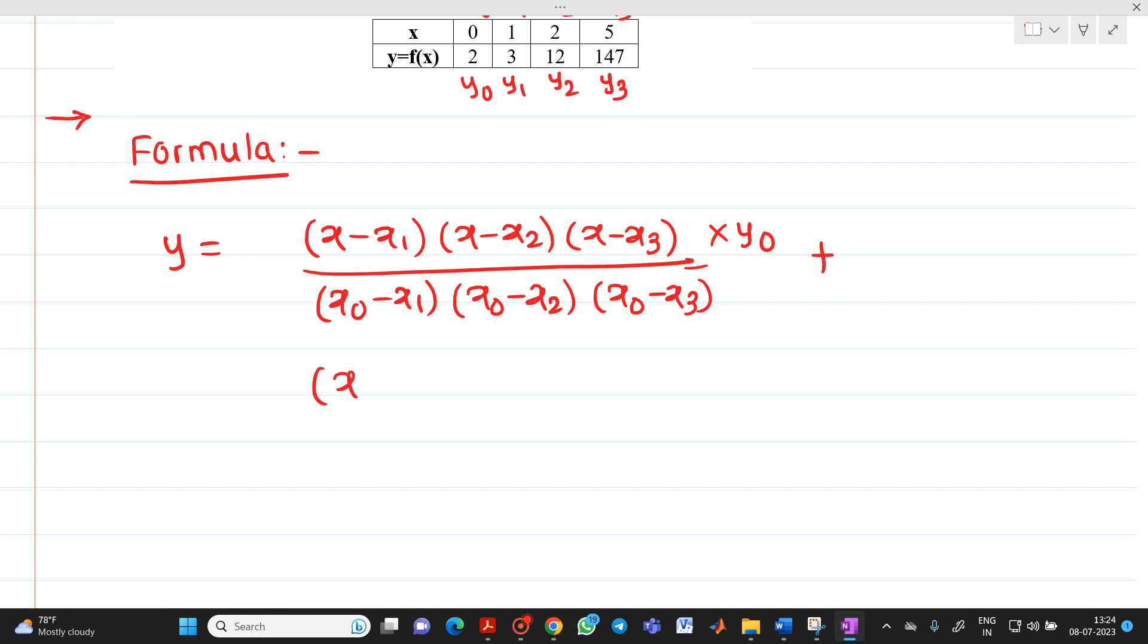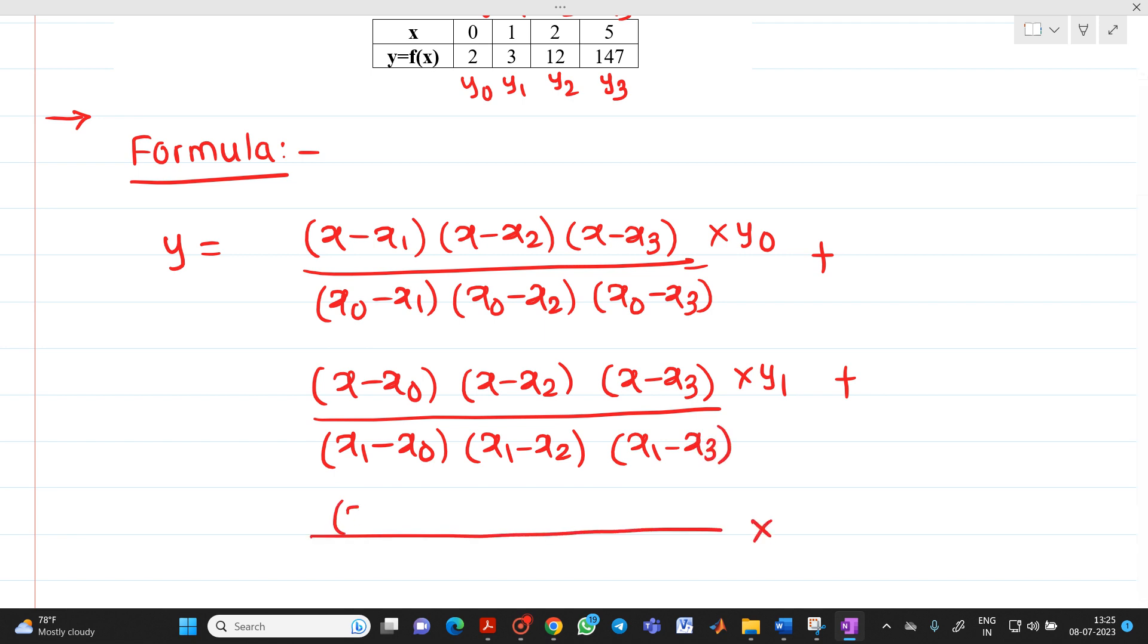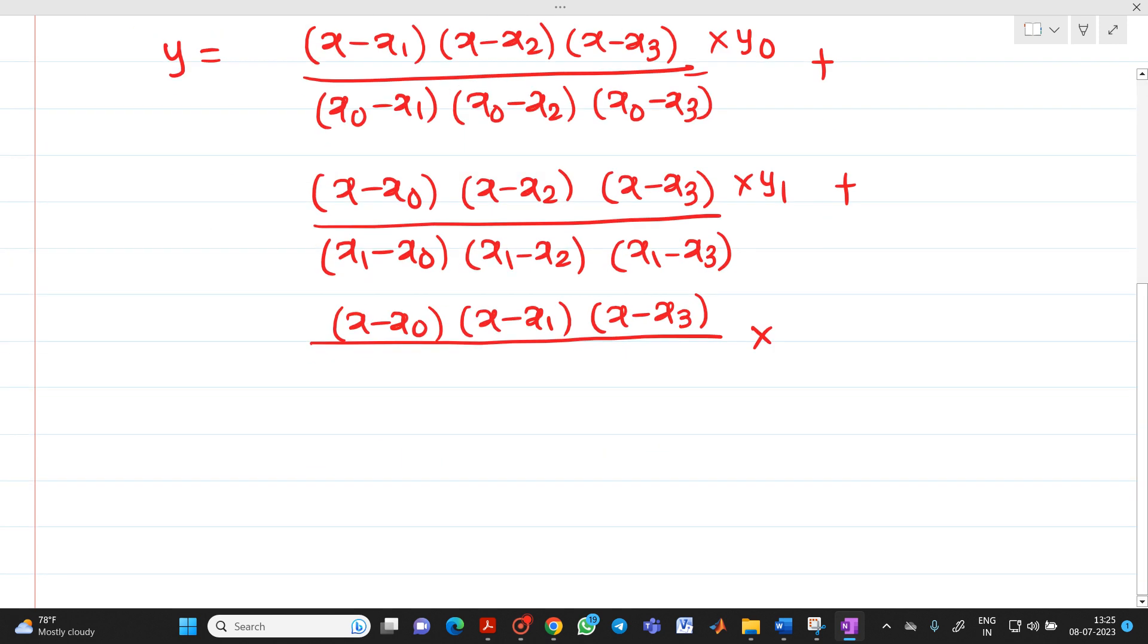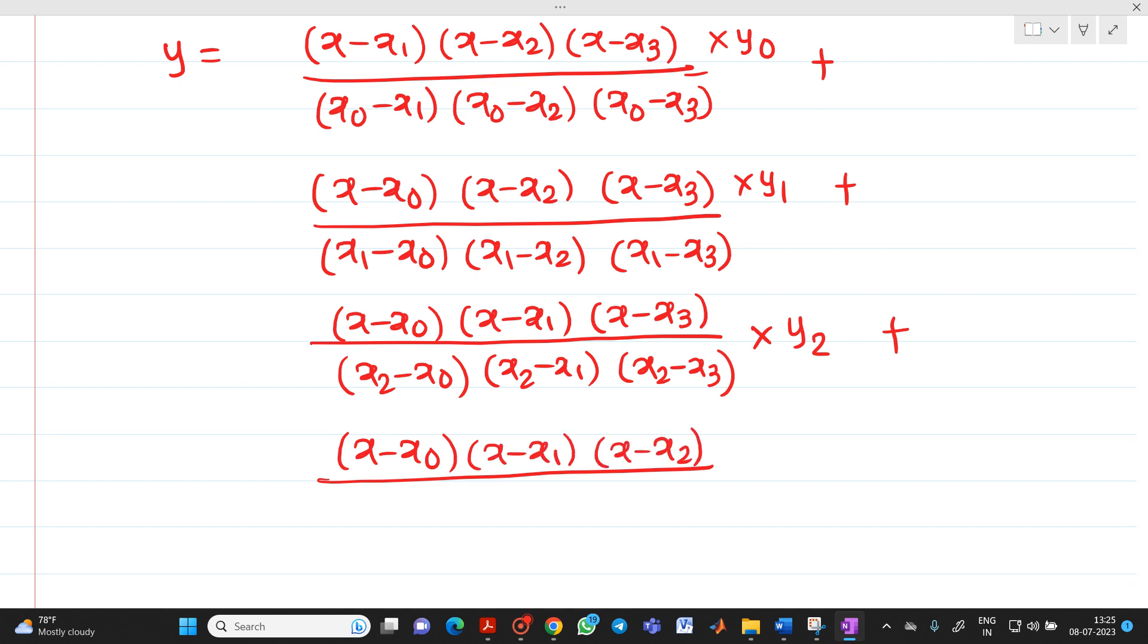x minus x0, x minus x2, x minus x3, into y1, whole divided by x1 minus x0, x1 minus x2, and x1 minus x3, plus x minus x0, x minus x1, x minus x3, into y2, divided by x2 minus x0, x2 minus x1, x2 minus x3, plus x minus x0, x minus x1, x minus x2, into y3, divided by x3 minus x0, x3 minus x1, x3 minus x2.